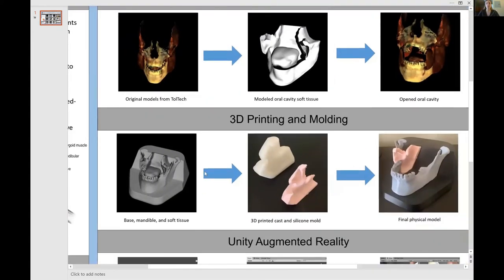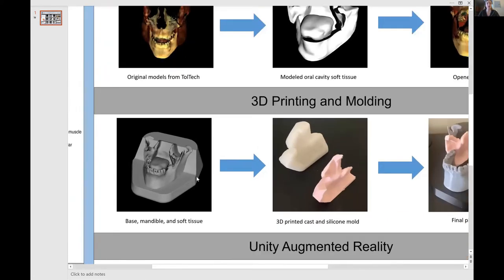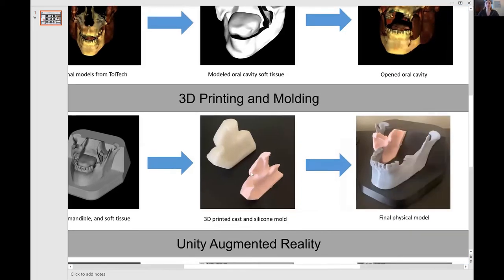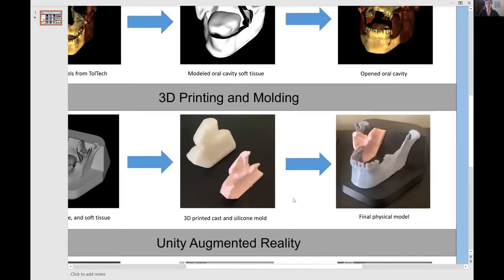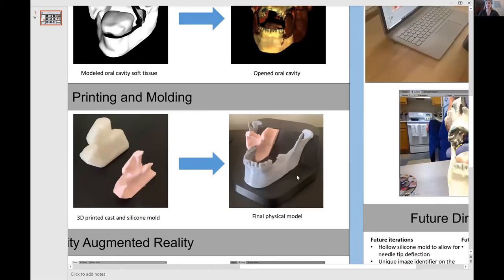The next step was 3D printing and molding. In Maya, we designed a base fitted with the mandible acquired from Touch of Life Technologies, and then the soft tissue model as well. In order to represent the density of the soft tissue as best as we could, we decided to silicone mold it. We have a 3D printed cast that was filled with silicone, giving us this silicone mold seen here in pink. Finally, all three physical models were fitted together: the 3D printed base, the 3D printed mandible, and the soft tissue cast.